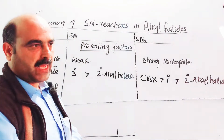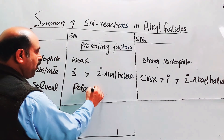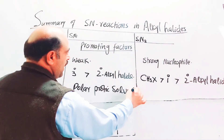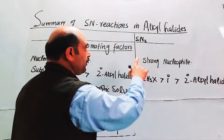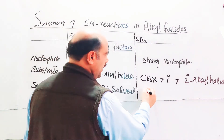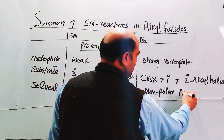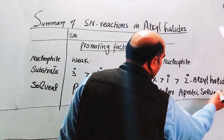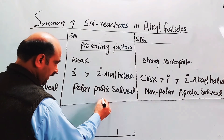For the solvent: SN1 mechanism is promoted and enhanced by polar protic solvent — a polar solvent with partial positive hydrogen. SN2 mechanism is promoted by non-polar aprotic solvent — a solvent without proton.